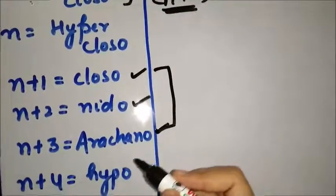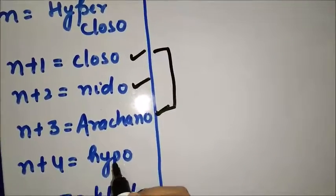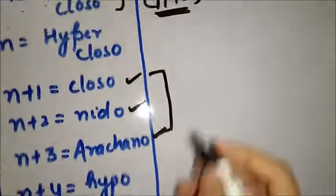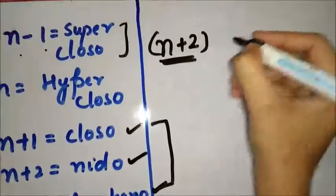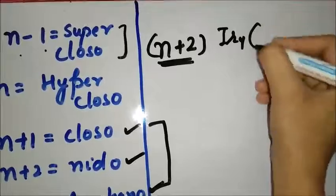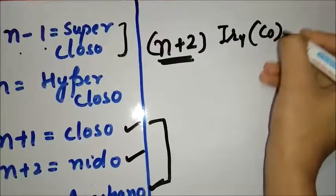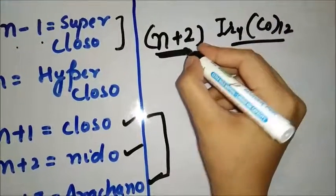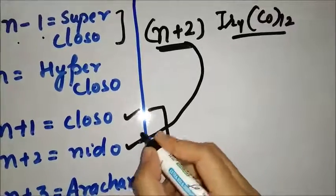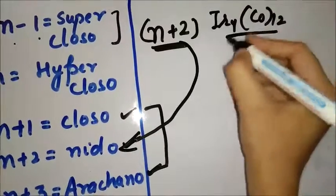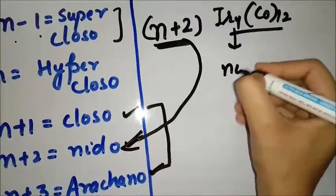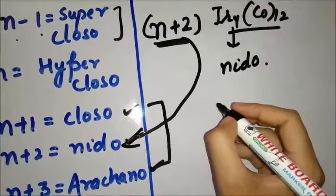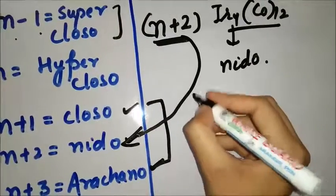There are others also: n + 4 = hypho and n + 5 = kledo. In our example of Ir₄(CO)₁₂, it comes out to be n + 2, so n + 2 gives you the structure nido. So for this compound the Wade nomenclature is nido.